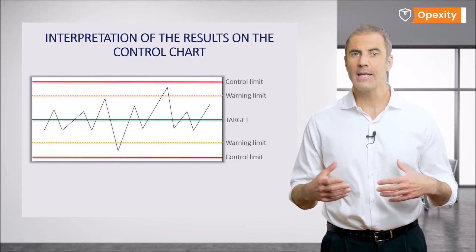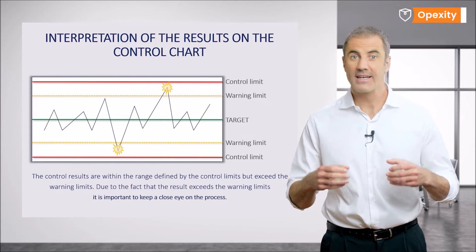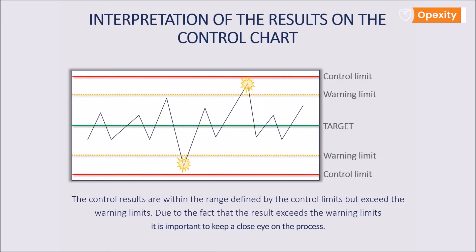On the other hand, any point outside the warning limits but not exceeding the control limits gives a clear visual signal that something is happening in the process that should not be happening. From that moment on therefore, attention should be paid, for example, to settings or other factors affecting the characteristic.